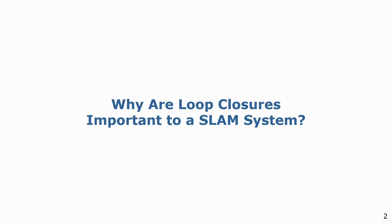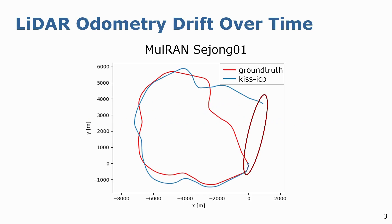Let us begin with an understanding of why loop closures are important in the SLAM pipeline. LIDAR sensors are among the primary sensing modality for SLAM systems, and LIDAR odometry forms the backbone of such a SLAM system. Despite all the progress made in ICP-based LIDAR odometry methods, they suffer from the issue of drifting pose estimates. Here we show a trajectory from the Mulran dataset of a long highway sequence and the corresponding LIDAR odometry estimates obtained from KISS-ICP. As seen in blue, the LIDAR odometry estimates gradually drift over time, and towards the end of the sequence this drift has a cumulative magnitude of about 3 km with respect to the ground truth trajectory.